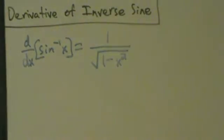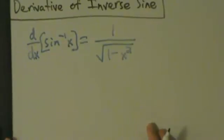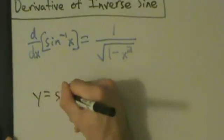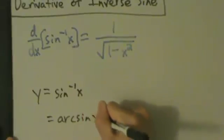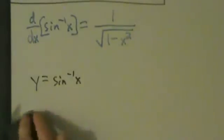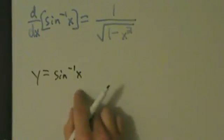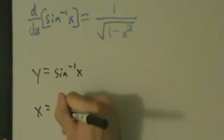So let's see why that's true. We're not going to use the limit definition — I really wouldn't even know where to go with that. What we're going to do is use the inverse function theorem. So here, let's say y equals inverse sine of x. Remember, that's the same thing as arc sine of x. y equals inverse sine of x means x equals the sine of y — just take the sine of both sides.